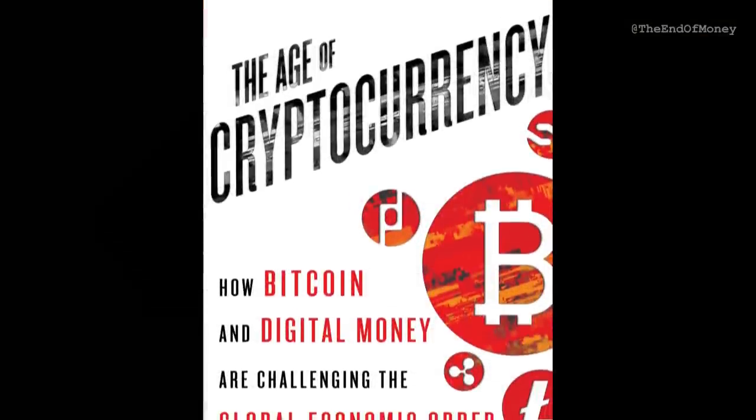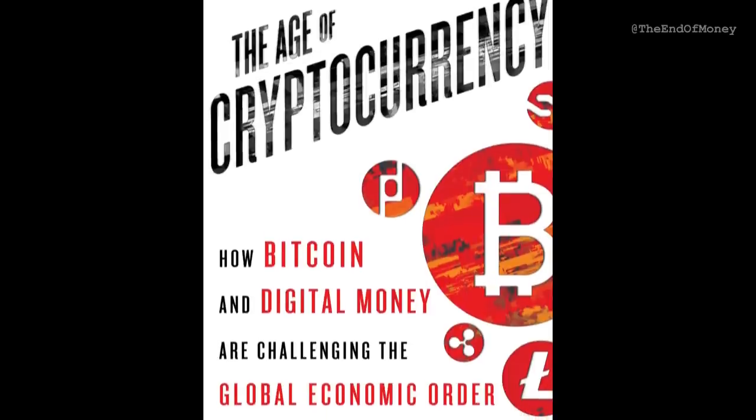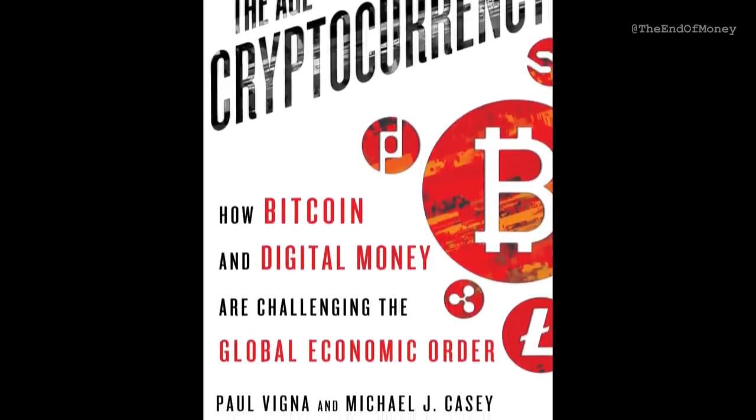The book ended up being a lot longer than we thought it would be than we had planned it out to be. There was a lot to tell. We tell some of it's historical. We go into the history of finance. We go into the history of Bitcoin and cryptocurrencies. Some of it is topical, what's going on right now. We talk about Mt. Gox, obviously, Silk Road, obviously.